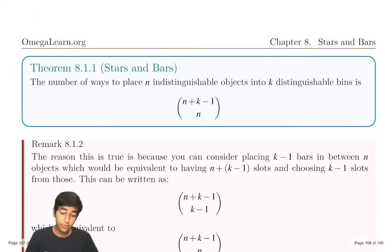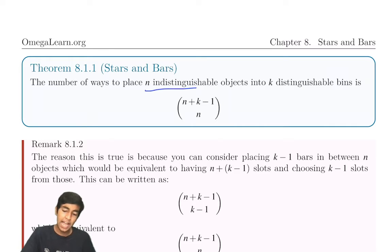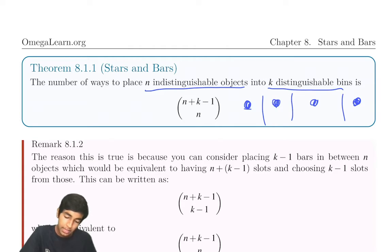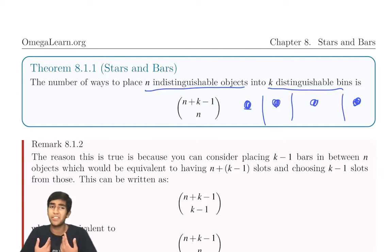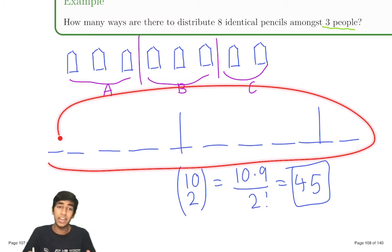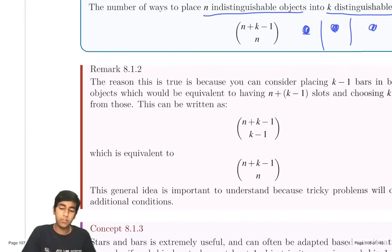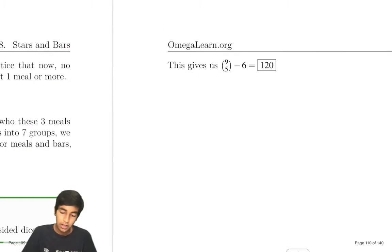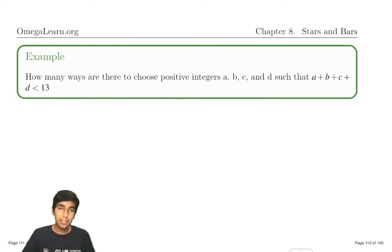There's a general formula for stars and bars: if we're distributing n objects into k sections, we draw k minus one bars, giving us n plus k minus one choose n. But you don't have to memorize this formula — you can just use the logic to construct the situation. It's important to understand why this is true, because sometimes it's going to be a little bit more tricky.